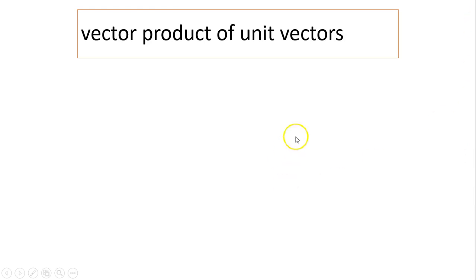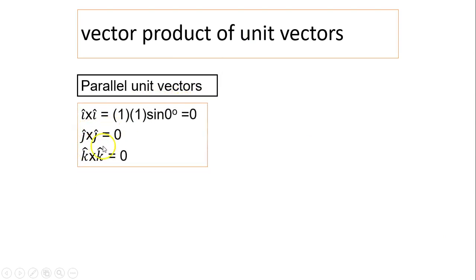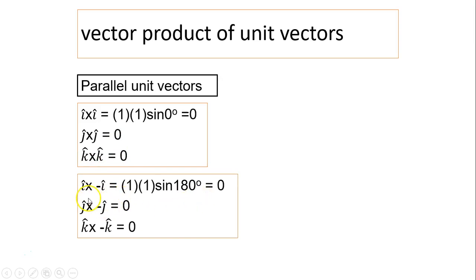Let's look at the vector product of unit vectors. For parallel unit vectors: i cross i equals magnitude of i times magnitude of i times sine 0°, and since sine 0° equals zero, i cross i equals zero. Similarly, j cross j equals zero and k cross k equals zero. If vectors are anti-parallel, i cross negative i is still zero, because sine 180° is zero. Same for j cross negative j and k cross negative k.